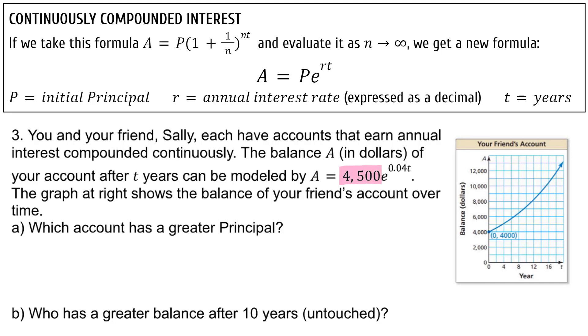The principal or starting amount in your account is $4,500. The starting amount or principal in your friend's account is $4,000. So your account has the greater principal.